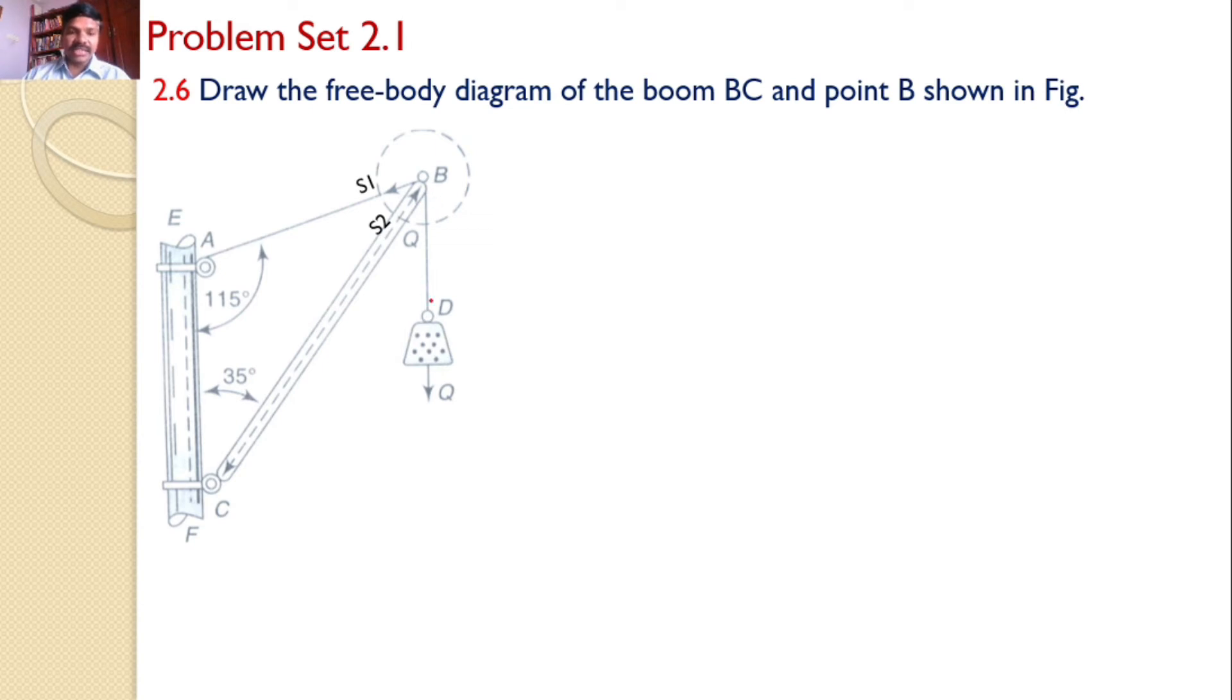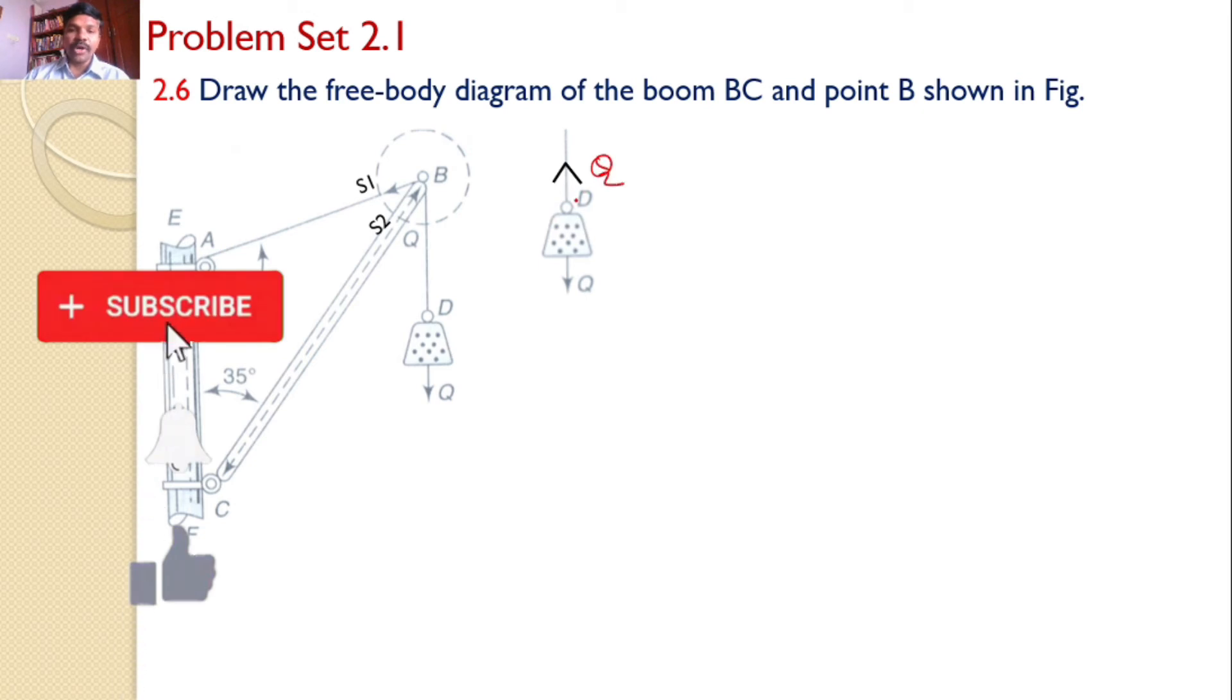Next, let us consider the string BD. Since it is a string, the force is along BD, and if you look at from point B, it is away from point B, or if you look at from point D, it is away from point D. What is the magnitude of that? Let us discuss like this. Just consider the weight D and the string here. Since weight is acting in the downward direction, the force in the string must be upwards, and the magnitude is Q and from point D. To satisfy the equilibrium condition, if the force is acting in the upward direction from point D, it must be downwards from point B. Hence, this is the direction of the force in the string BD, which is away from point B, and the magnitude is Q.